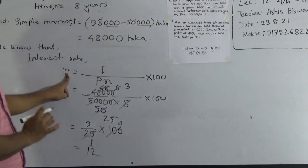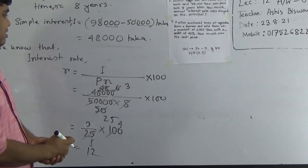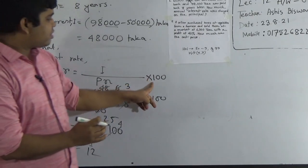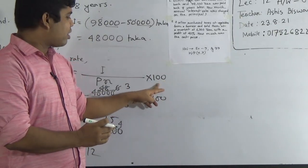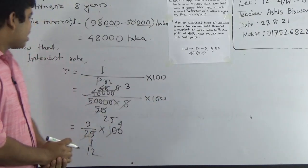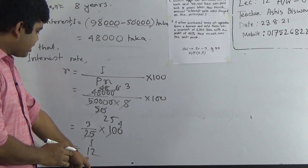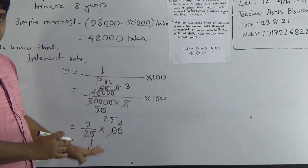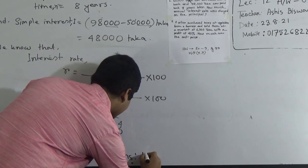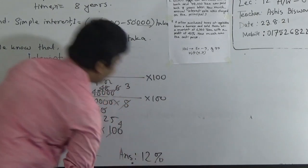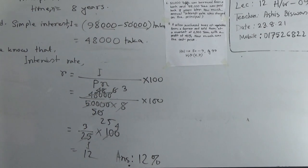Rate of interest means we convert this fraction into percentage, so we multiply by 100. 25 into 100 gives 4, and 3 times 4 gives 12. So the rate of interest is 12%. When writing the answer you must include the percent sign. I hope you have understood. This is the answer.